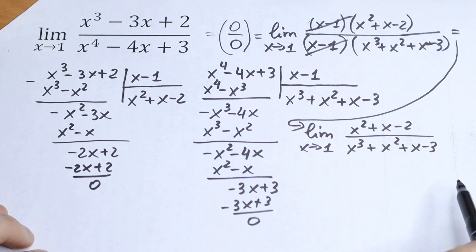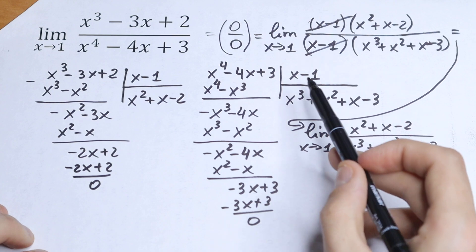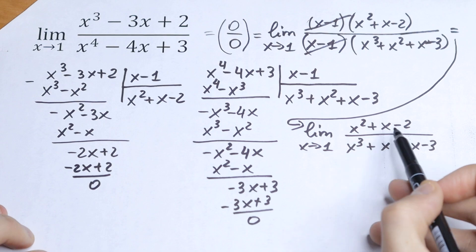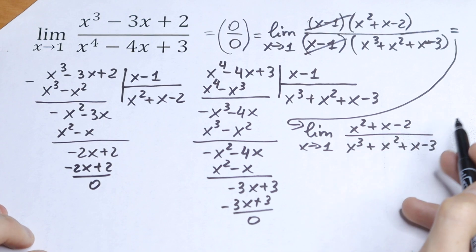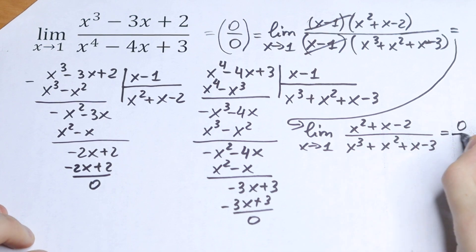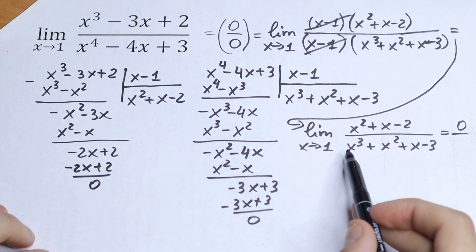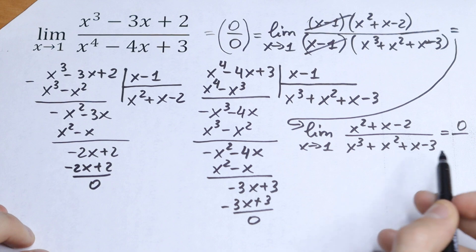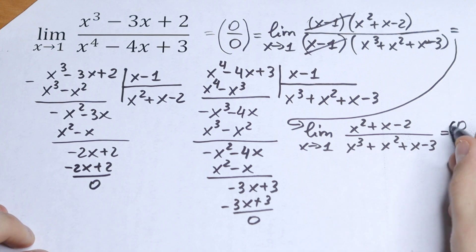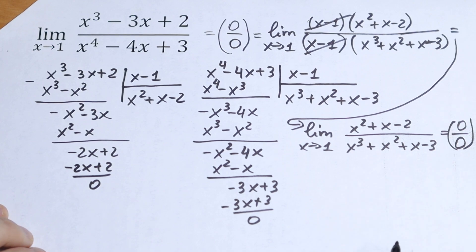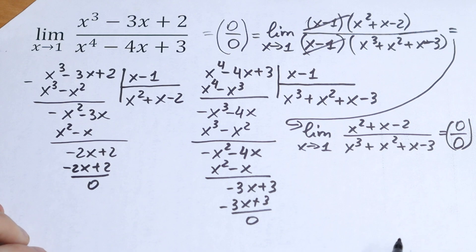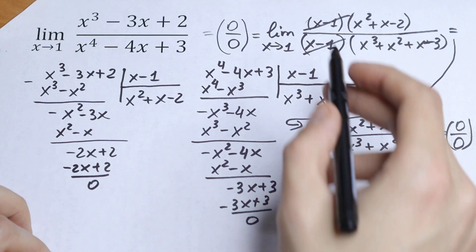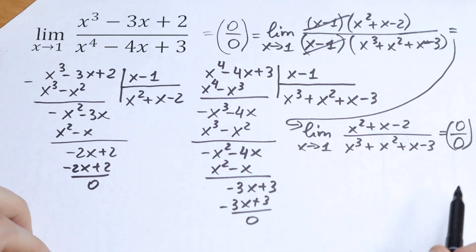We cancel the (x minus 1) expressions that give us the undefined answer, and now we have the limit as x approaches 1 of (x-squared plus x minus 2) over (x-cubed plus x-squared plus x minus 3). Let's use direct substitution: 1 plus 1 minus 2 is 0, and 1 plus 1 plus 1 minus 3 is also 0. So we have 0 over 0 once more. We need to factor out x minus 1 again.